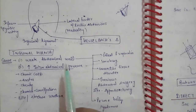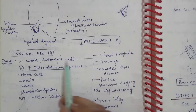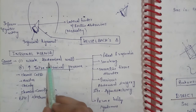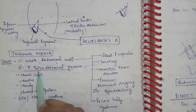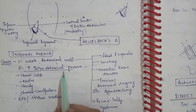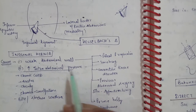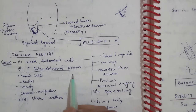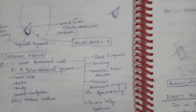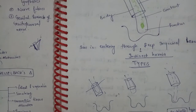Inguinal hernia causes: the main causes are weakness of the abdominal wall and increased intra-abdominal pressure. Intra-abdominal pressure can be increased due to obesity, ascites, COPD, constipation, and BPH. These are the causes of inguinal hernia.